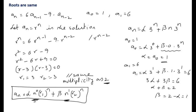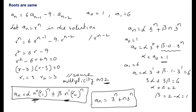Since α = 1, substituting gives β = 2 - 1 = 1. Substituting both values into the solution: aₙ = 3ⁿ + n·3ⁿ. This is the final solution for the given recurrence relation — an example of solving when the roots are the same.